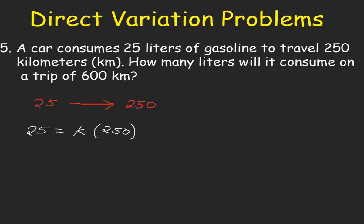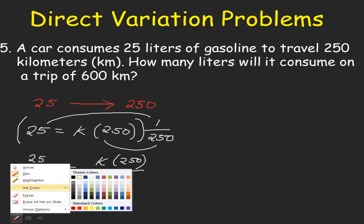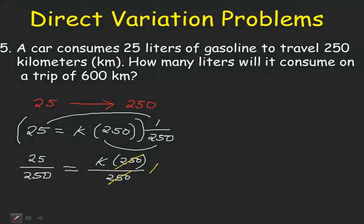To find for k, we need to cancel out 250. To cancel out 250, divide both sides of the equation by 250. So 25 divided by 250 equals 0.1. And this is our value for k.